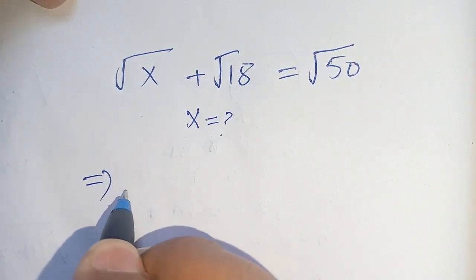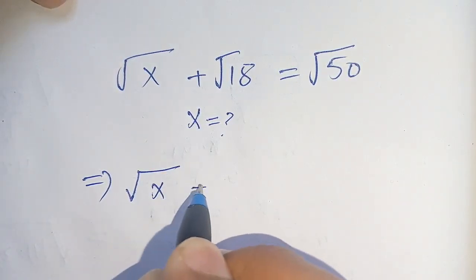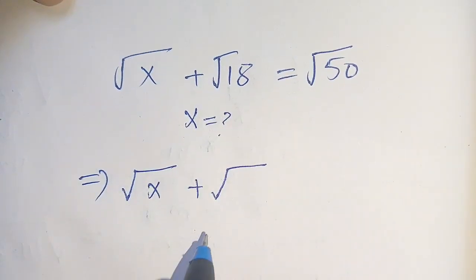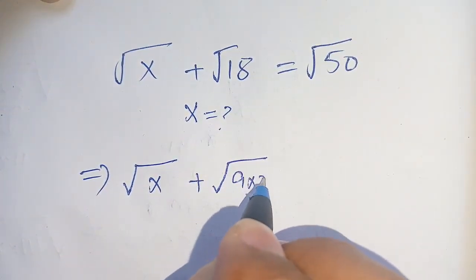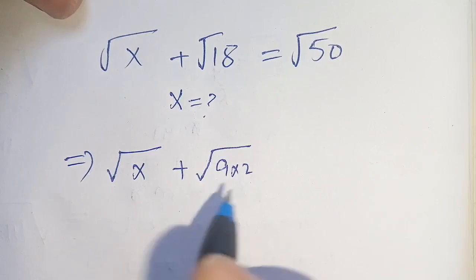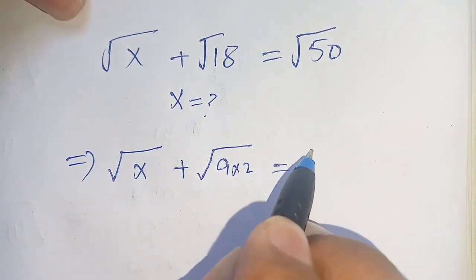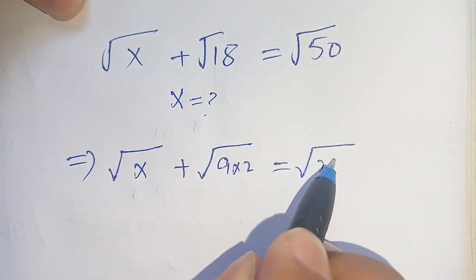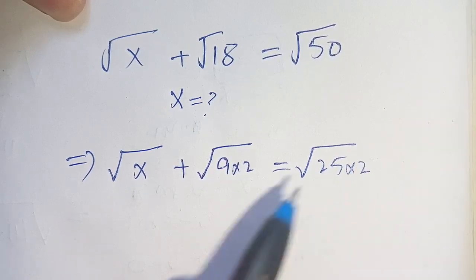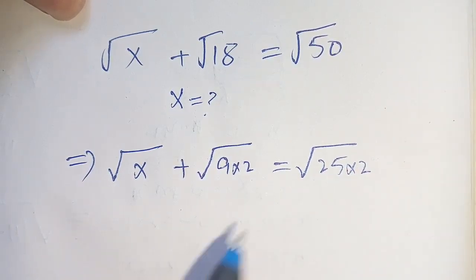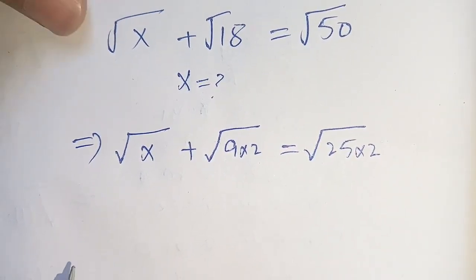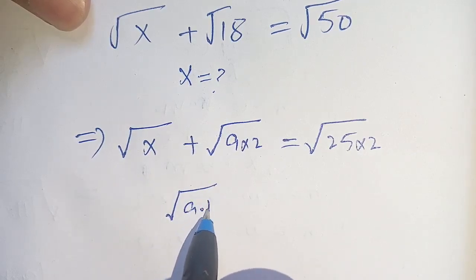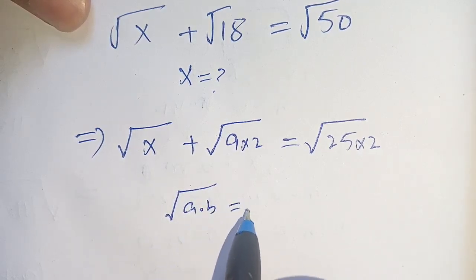We can write square root of 18 as square root of 9 times 2, since 9 times 2 equals 18. And square root of 50 can be written as square root of 25 times 2, since 25 times 2 equals 50.